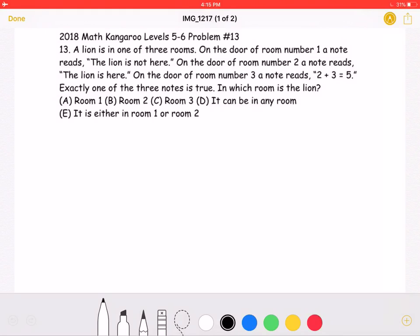On the door of room number 2, a note reads, the lion is here. On the door of room number 3, a note reads, 2 plus 3 equals 5.